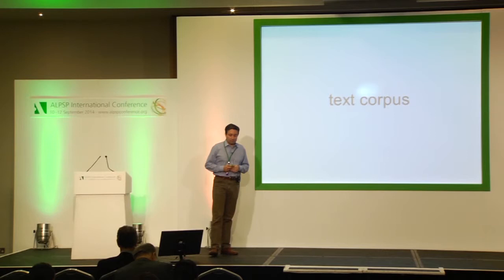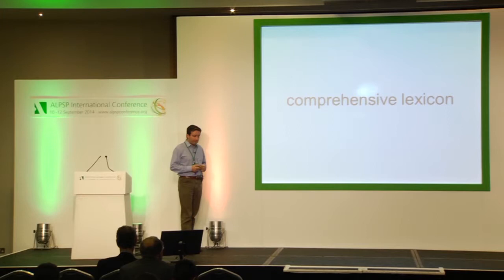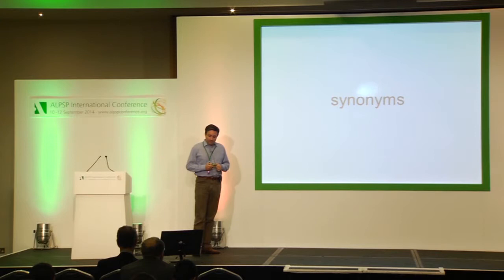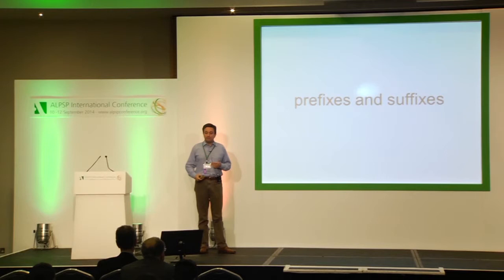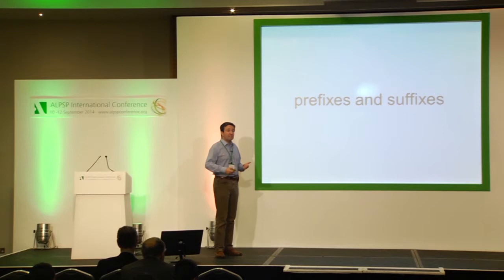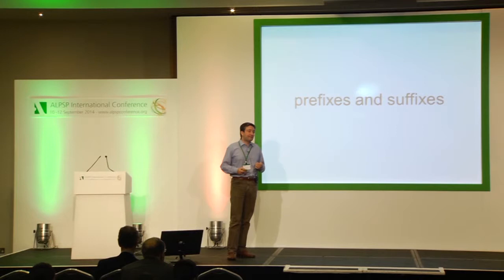You also need a text corpus — the corpus I'm working on is Medline abstracts primarily, and about 2 million articles full text, which I plan to expand via CrossRef initiatives. Besides that, you need a comprehensive lexicon — the names and which names are synonyms for different things. You need expansion rules: even with a very comprehensive synonyms list you'll be missing variants, for example the same names with certain prefixes or suffixes added, particularly with gene names. People might add letters in front of a gene name to indicate which organism it's from.